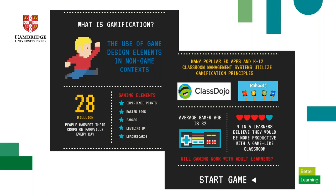Another one is Kahoot, which takes these gamification ideas and applies them into a platform we're going to look at. It's very popular in K-12, but I've used Kahoot with elementary students all the way up to adults. The results are always the same, because the average gamer is 32 years old — not so young — and four in five adult learners believe they would be more productive with a game-like environment. So even though some ideas come out of K-12, we see them being adopted and enjoyed by adult learners.